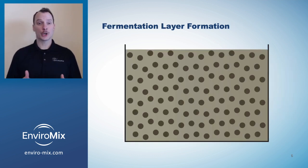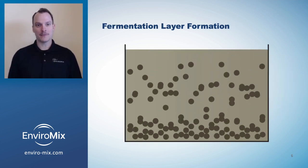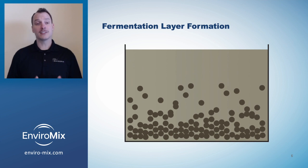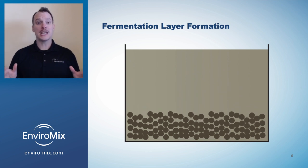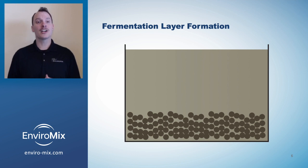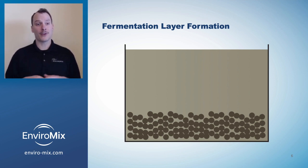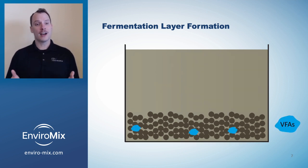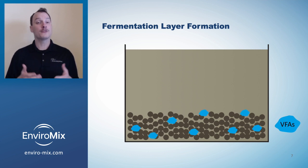When mixing is turned off, the biomass settles and accumulates at the bottom of the tank. A sludge blanket forms, creating the fermentation layer. Accumulating solids create a higher concentration of sludge, which in turn increases the anaerobic mass fraction and SRT. Over time, the fermentation layer hydrolyzes and ferments carbon, producing VFA.